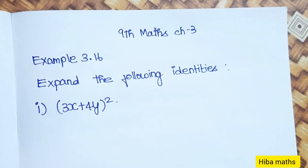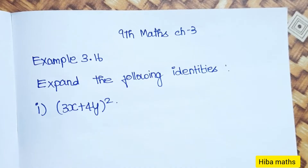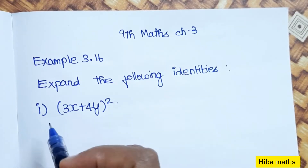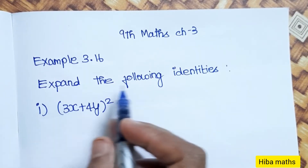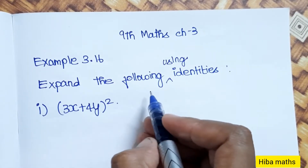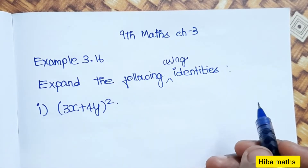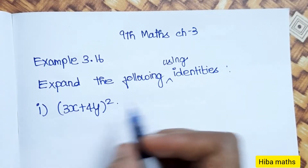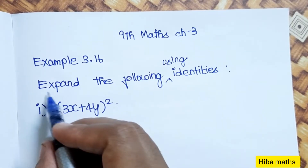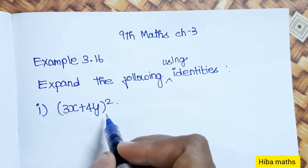Hello students, welcome to HBSE Class 9 Standard Maths Chapter 3, Example 3.16 — Expand the following using identities. So we can expand the following questions.